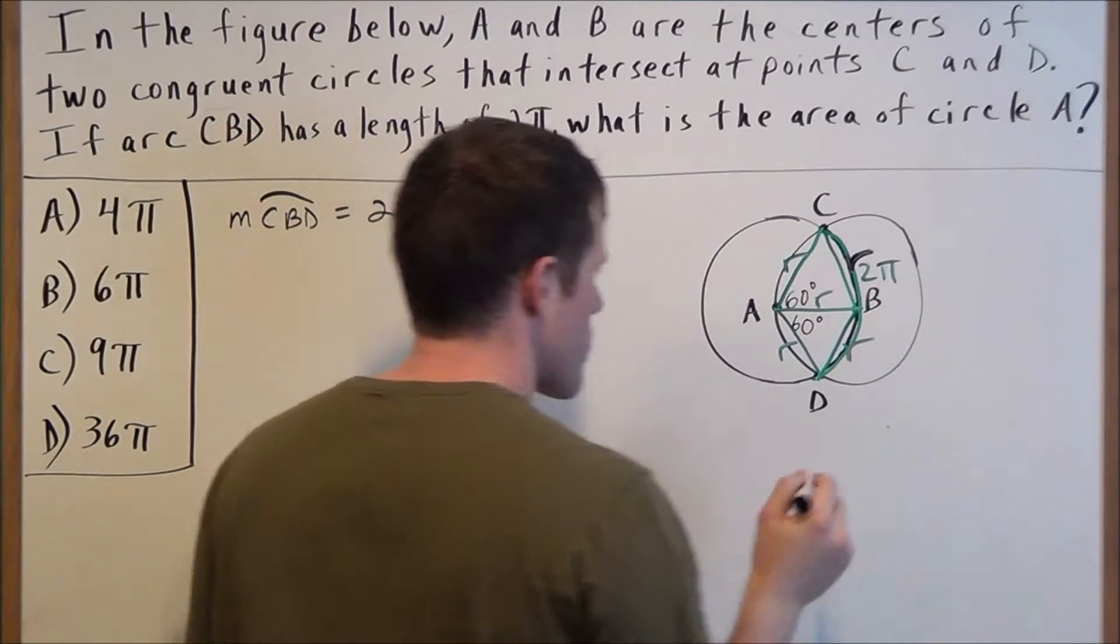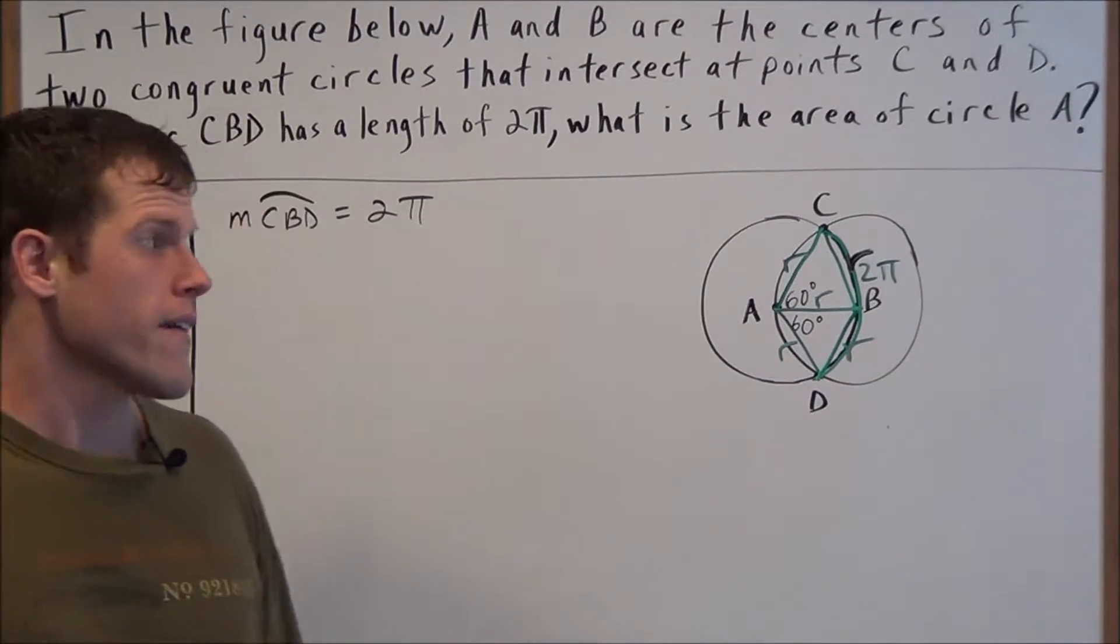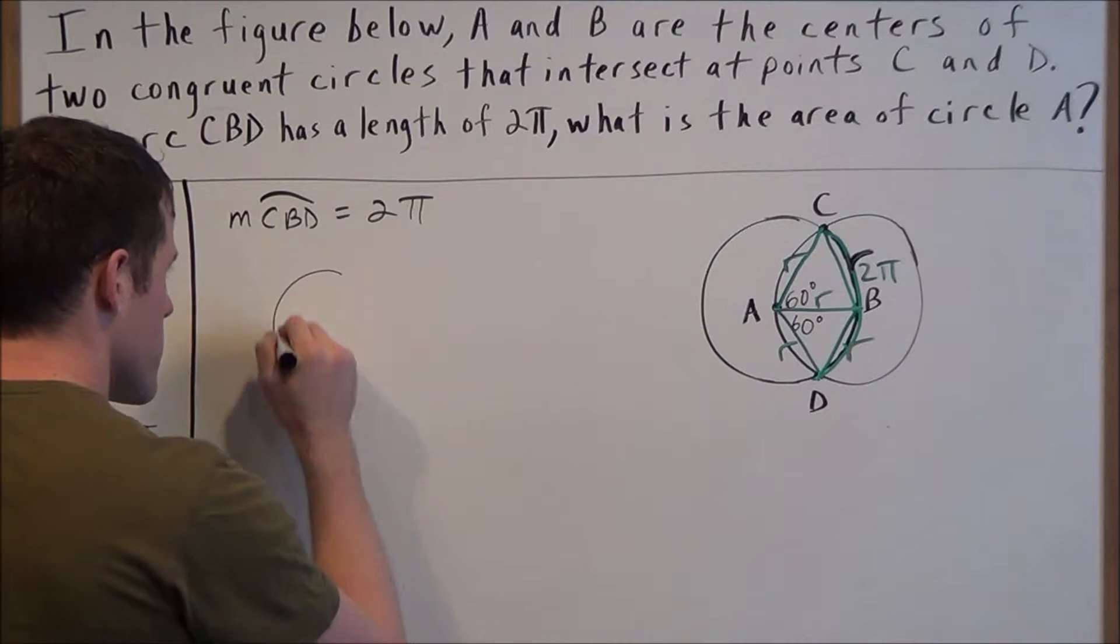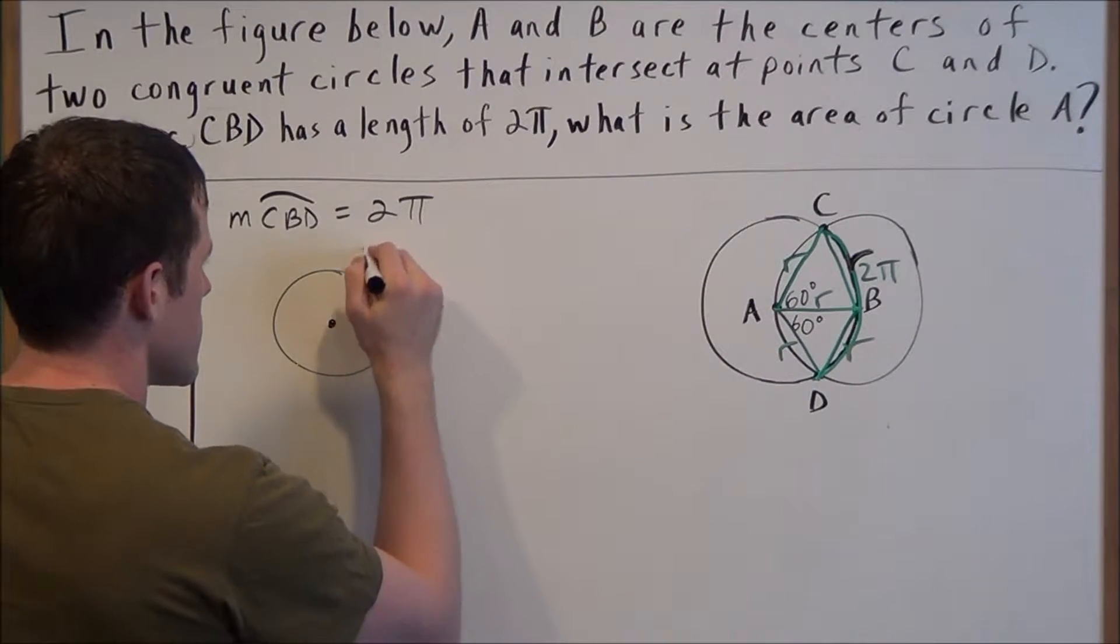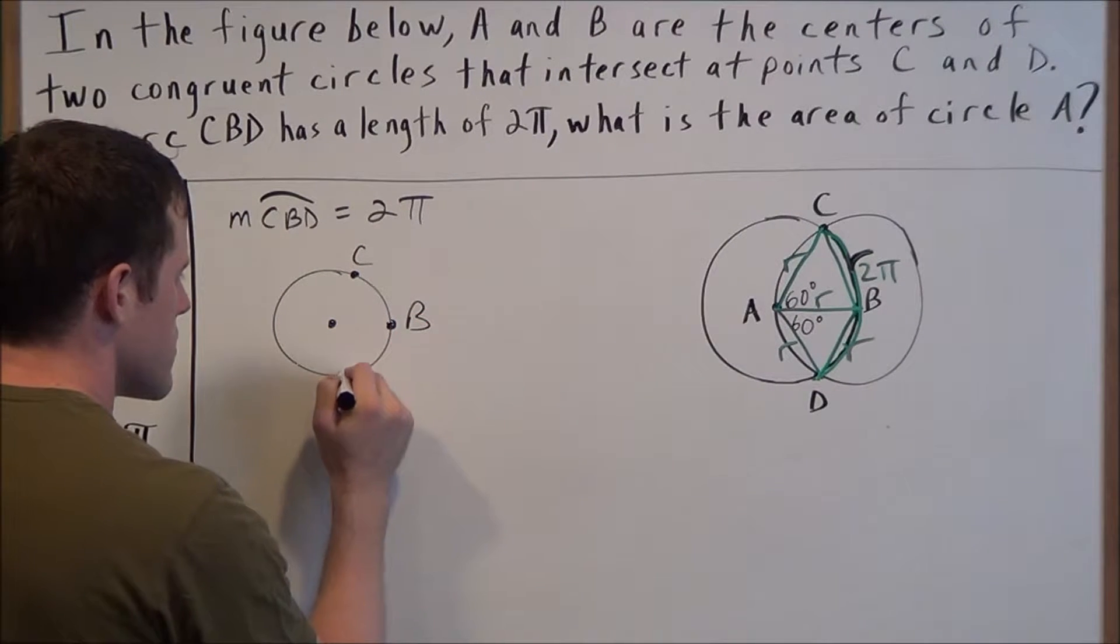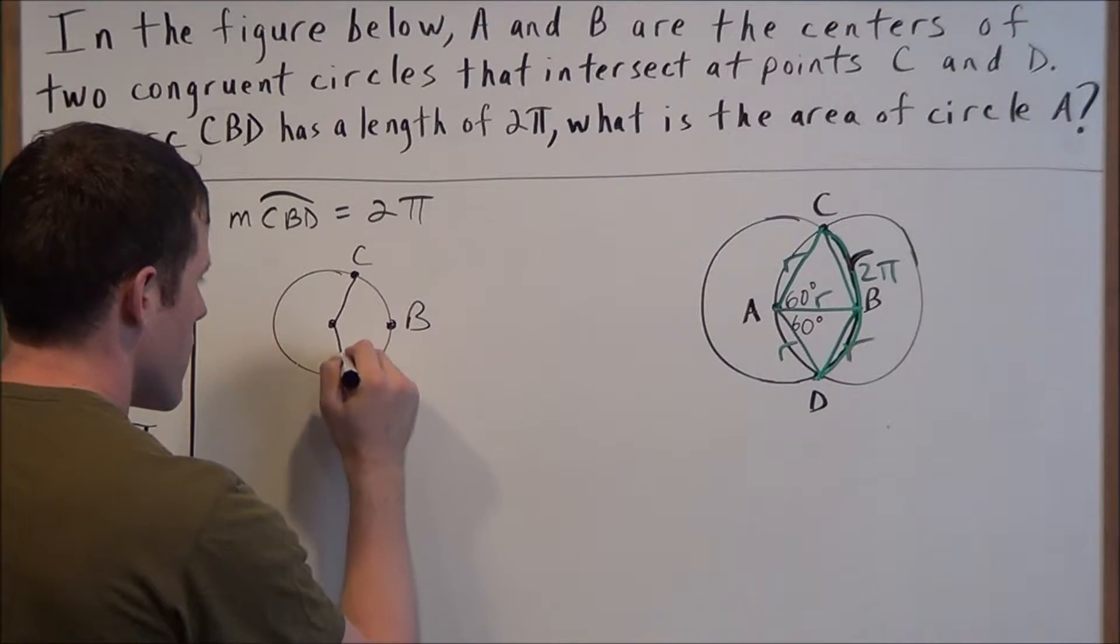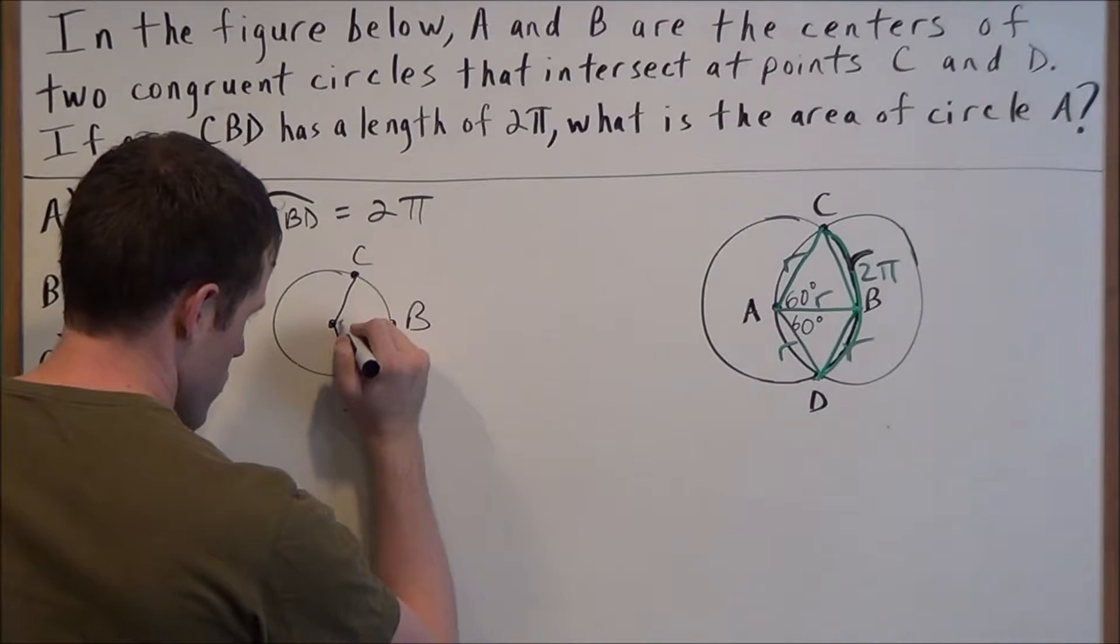So we could label a few of them 60 degrees. But what this tells us is the missing link that we need to solve this problem. So if I extract circle A, I draw it over here, and I write points C, B, and D, then the measure of the central angle that intercepts this arc is 120 degrees.